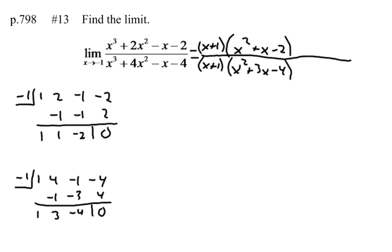So now, those x plus 1s cancel out. Now, can I use direct substitution? If I plug negative 1 in my denominator now, I get 1 minus 3 minus 4. It does work. So now, I'm going to plug negative 1 in my numerator and denominator.